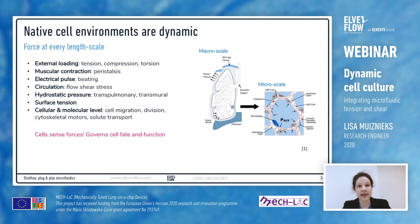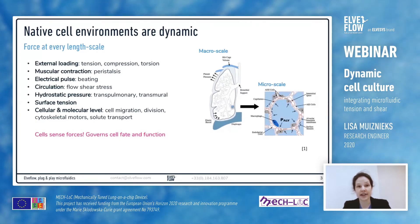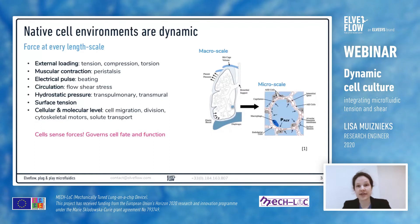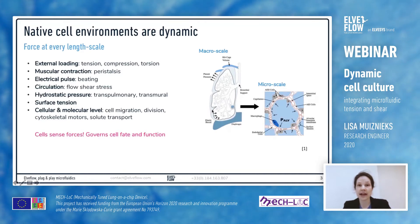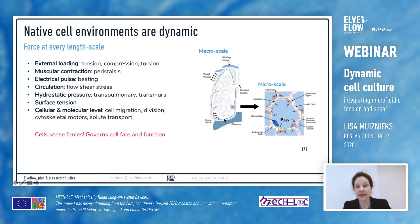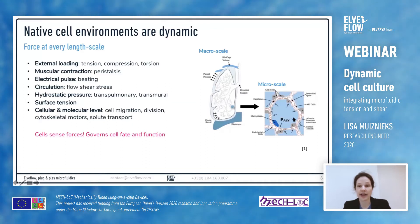Electrical pulses control the beating of the heart and the flow of blood down the arterial tree, and the circulation of fluid puts shear stress on the vessel walls. Hydrostatic pressure, in particular across the wall of the lung, helps in breathing, whereas on the scale of the smallest functional unit of the lung — the alveolar air sacs — surface tension is very important in helping these to stop collapsing.